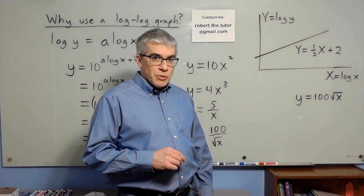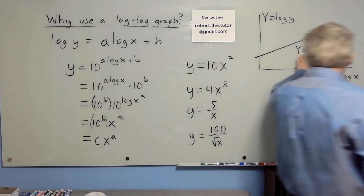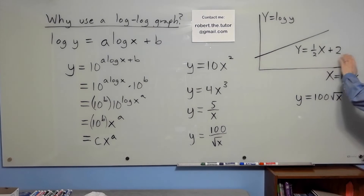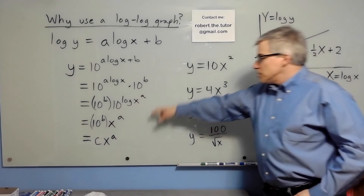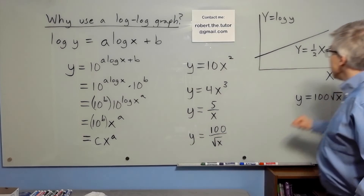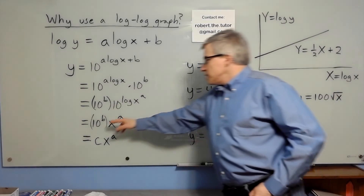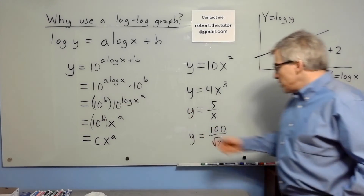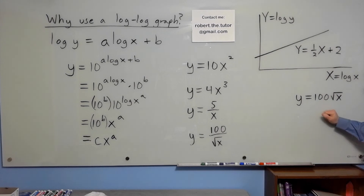Just to show one example: suppose on your log-log graph you get big Y equals one-half times big X plus two. What does that mean? Well, the one-half is the exponent A, so we have X to the one-half, which is the square root of X. The B here is 2, and 10 to the B is the coefficient, so it's 100. Therefore, y equals 100 times the square root of x — and that is graphed as a straight line on a log-log graph.